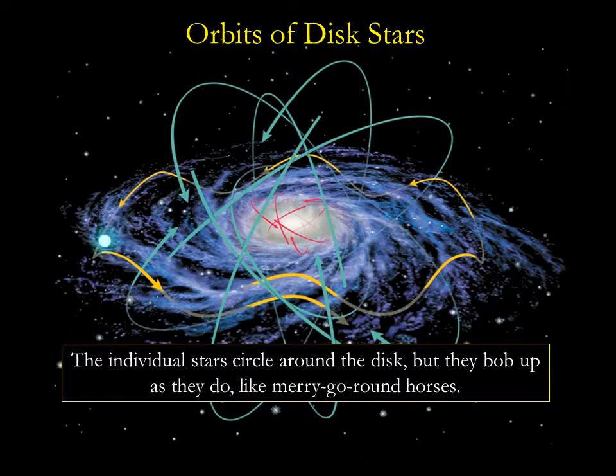Let's begin with the disk stars. If you could stand outside the Milky Way and watch it for a few billion years, the disk would resemble a huge merry-go-round. The individual stars circle around the disk, and they bob up and down as they do, like merry-go-round horses. As a star orbits, if it overshoots and moves above or below the disk, the mass of the galaxy will pull it back — this is what gives stars their up-and-down motions. The stars near us take about 200 million years to make one orbit around the galaxy, and one up-and-down bob takes a few tens of millions of years.